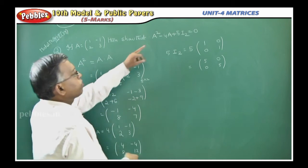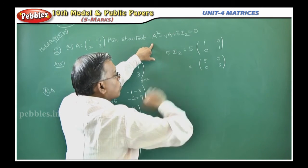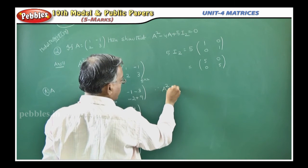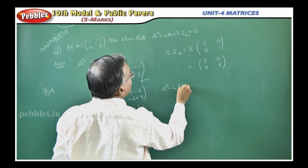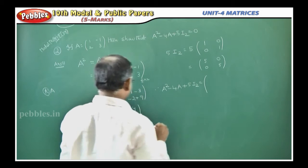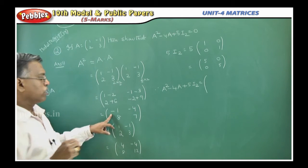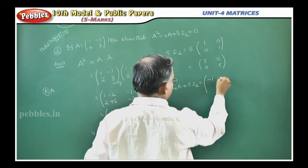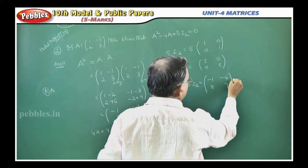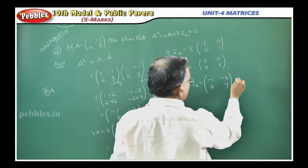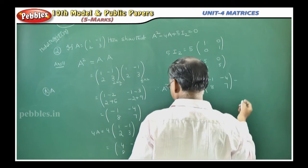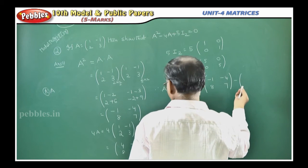All the matrices you got, then we will simplify, then we get the 0 matrix. Therefore, you take A square minus 4A plus 5I2, that is equal to: first you write down A square matrix, we already found minus 1, minus 4, 8, 7, minus 4A. I can write minus 4 into A.